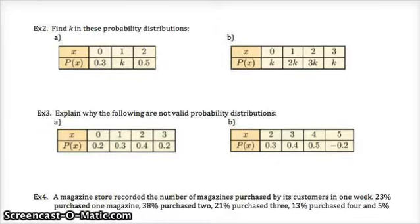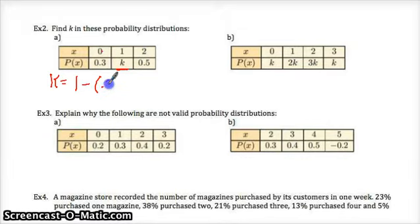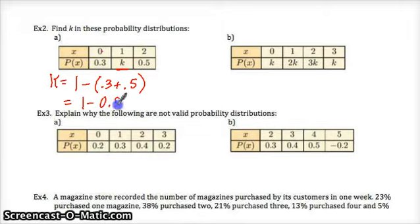Here is the probability distribution. We don't know what the experiment was, but we know we had possible outcomes of zero, one, and two. Thirty percent of the time — three-tenths — we got zero as a result. Here, fifty percent of the time, we got two as a result. So what is the missing K? Well, K is going to equal one minus the sum of those other two probabilities, because all three probabilities must sum to one. So it's one minus 0.8, and K equals 0.2.